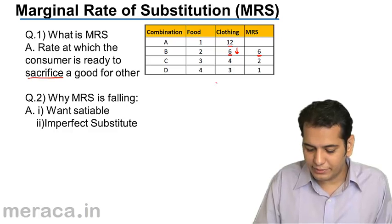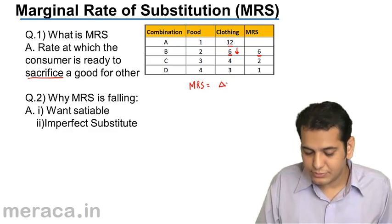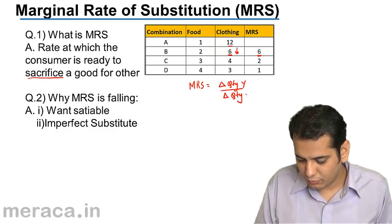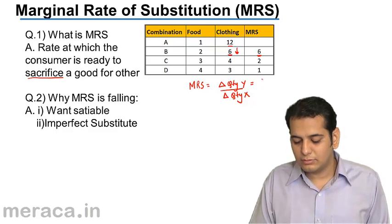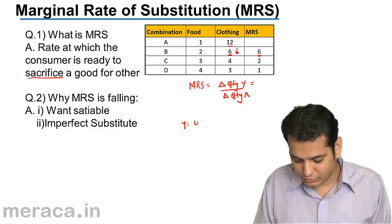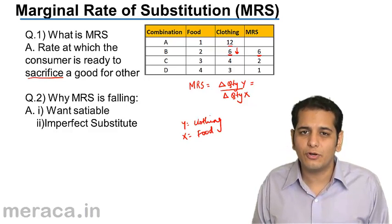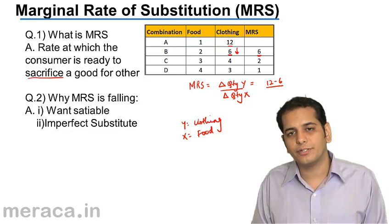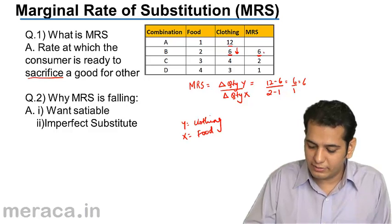MRS can be calculated as change in quantity of Y upon change in quantity of X. By how many units has the quantity of good Y changed? Y in our case is clothing, and X in our case is food. So what is the change in quantity of clothing at point B? It is 12 minus 6, and what is the change in the quantity of food? It is 2 minus 1. This is 6 upon 1, which equals 6. So MRS here is 6.